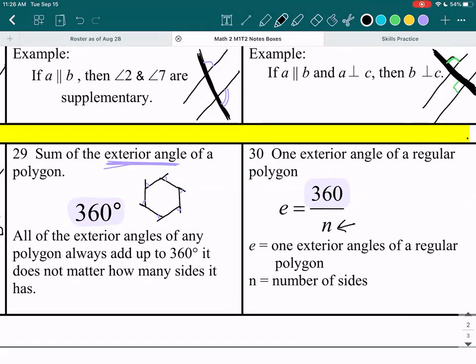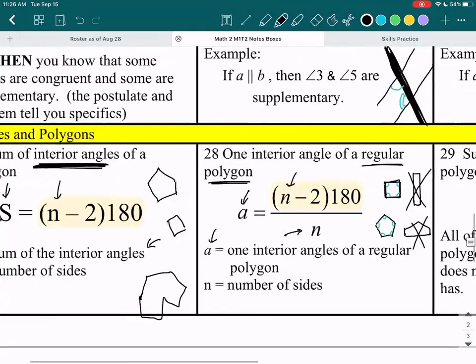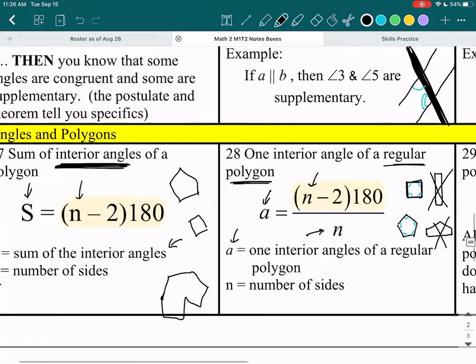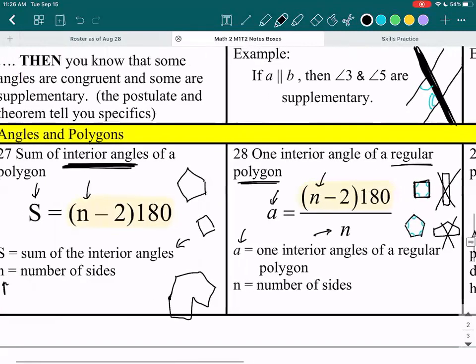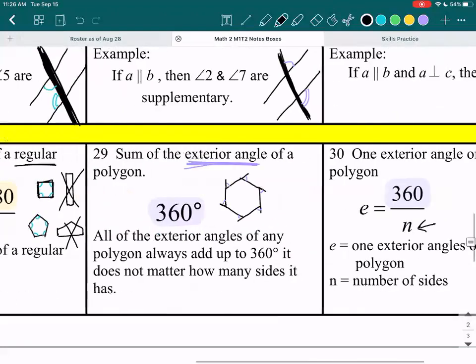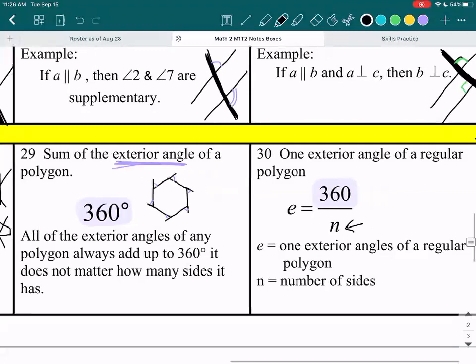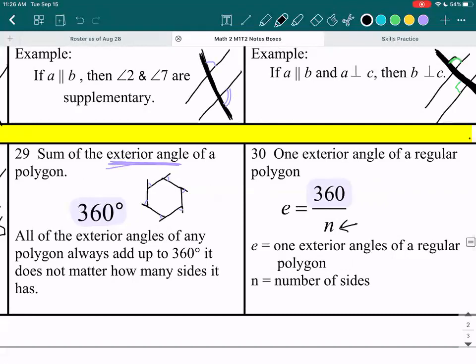So it's kind of similar to how in our first equation you take that first formula for the sum of the interior angles and then you divide it by the number of sides. Now we're taking the sum of the exterior angles, which is 360, and dividing it by the number of sides for the one exterior angle of a regular polygon.